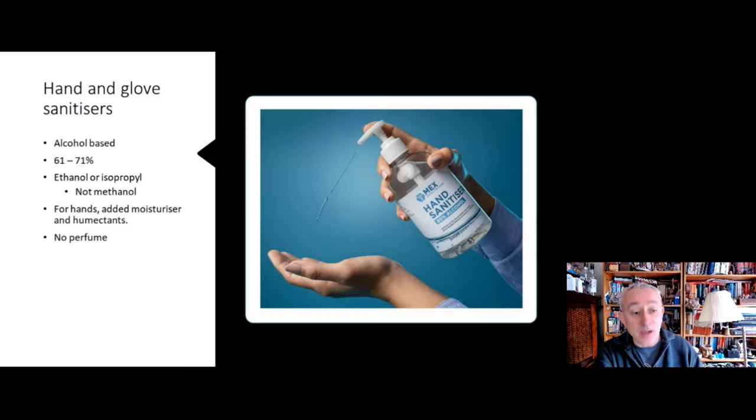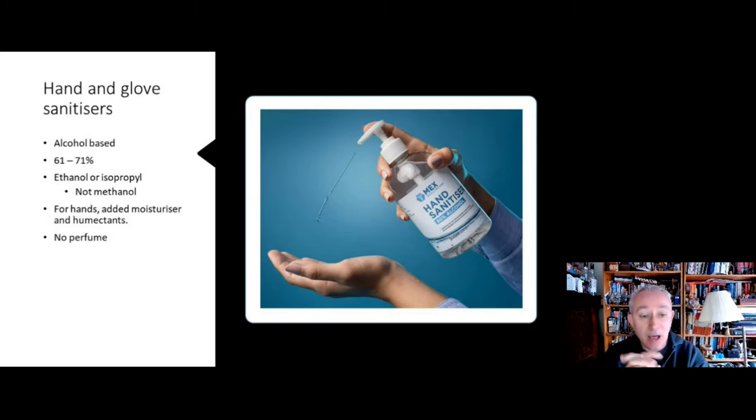Just a quick thing about sanitizers themselves. They are alcohol-based and the effective range is between 61 and 71 percent alcohol, and the optimal alcohols to use are either ethanol or isopropyl alcohol. Something like methanol is not allowed to be used because it's highly toxic. For bare hands, ethanol is best and we tend to use denatured ethanol which has some added moisturizer and also chemicals that are called humectants. These are ingredients that you might find in household lotions and cleansers and they help to hydrate the skin because they attract water molecules like a magnet. It's also very important that no hand sanitizers contain any perfumes because the perfumes can interfere with the efficacy of the sanitizer, so we go for non-perfumed sanitizers for both bare hands and for gloved hands.